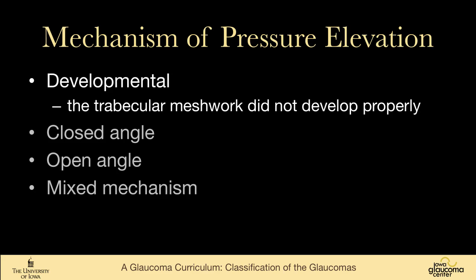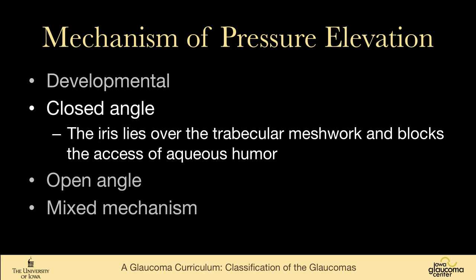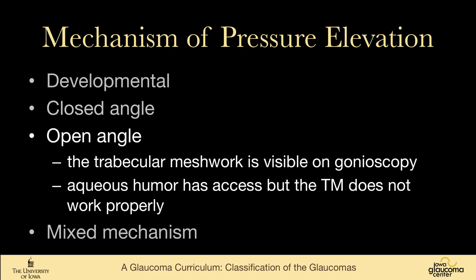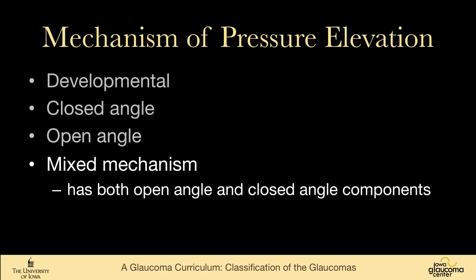In developmental glaucomas — like primary congenital, Sturge-Weber, and Axenfeld-Rieger syndrome — the trabecular meshwork did not develop properly and does not work properly. In closed angle glaucoma, the iris lies over the trabecular meshwork and blocks access of the aqueous humor to it. In open angle glaucoma, the meshwork is visible and aqueous can reach it, but the meshwork is not functioning normally.